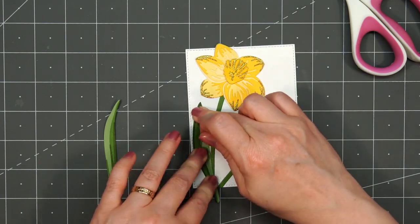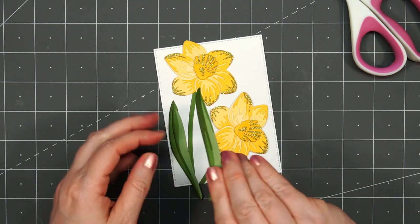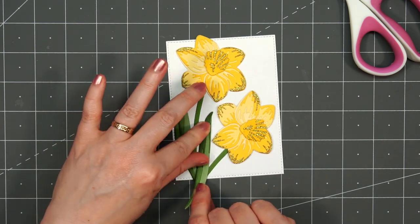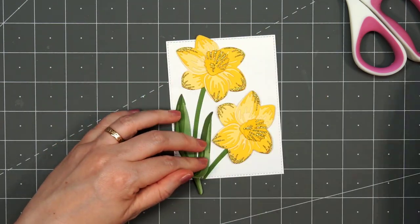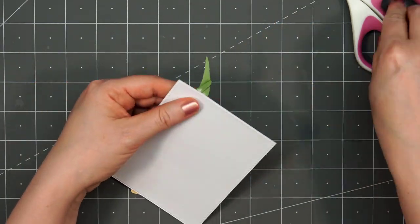I'll put this taller leaf on the very left. The second leaf, I'm just going to tuck it in between the two flowers. Once both of those are in place, I'll flip this panel and trim off the extra.